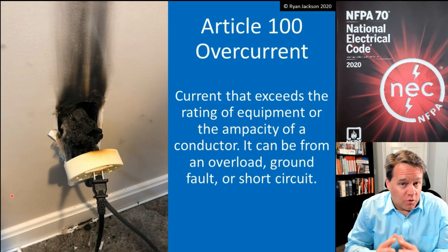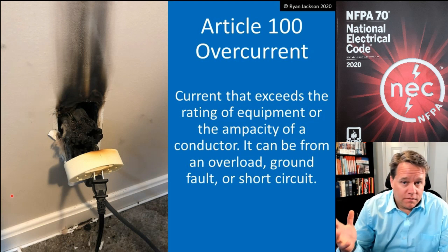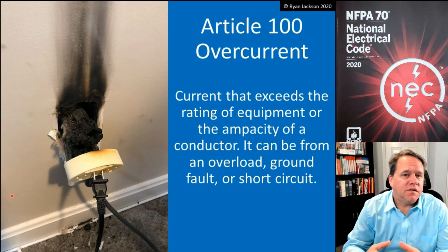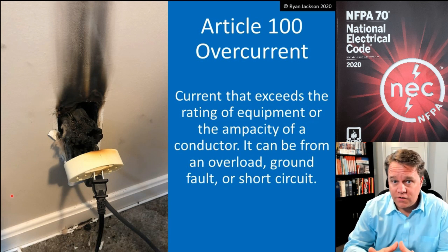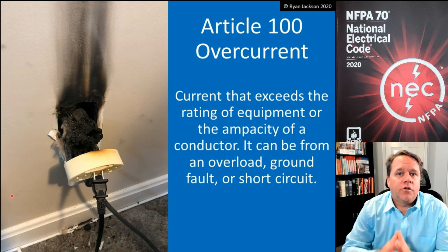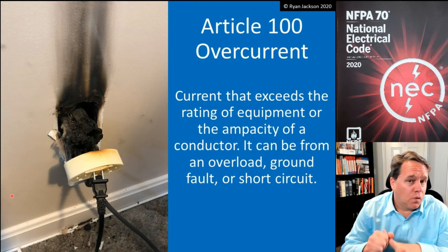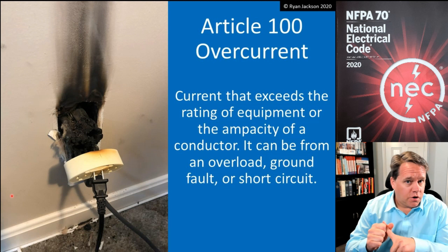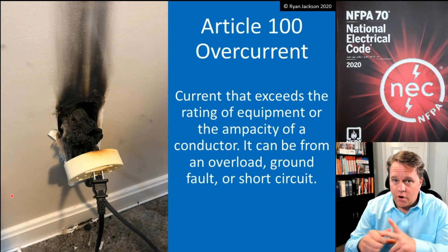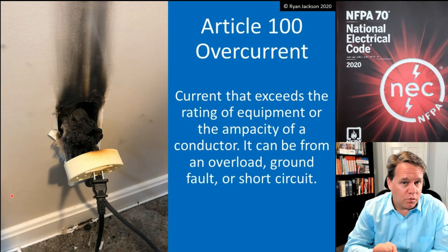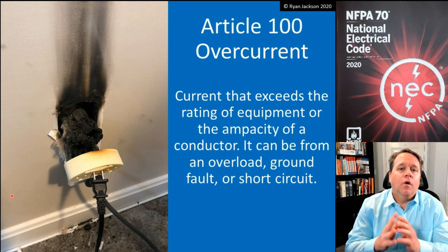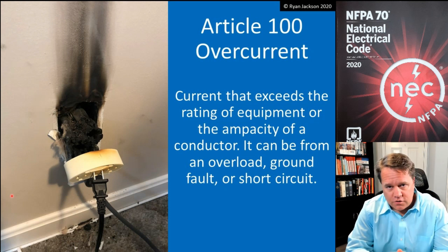When it comes to the definitions in Article 100, some of them are very simple and some are not. Overcurrent is a definition that is somewhat simple but fully understanding it is a bit more complex. Overcurrent is defined as current that exceeds the rating of equipment or current that exceeds the ampacity of a conductor. Both conductors and equipment can be subjected to overcurrent, and we have to protect both.